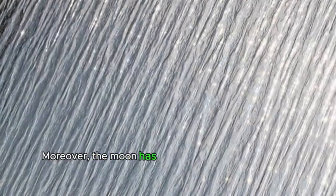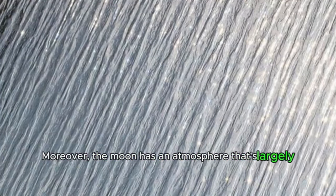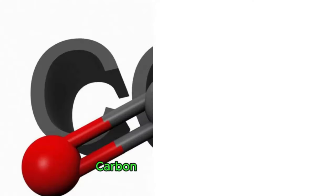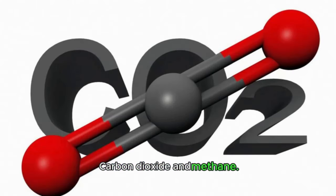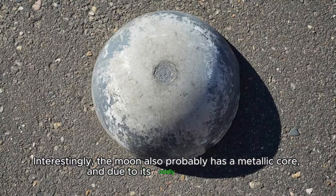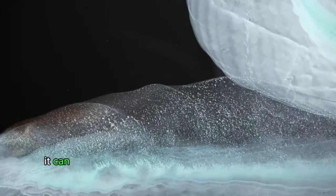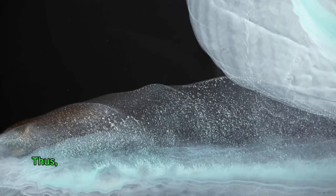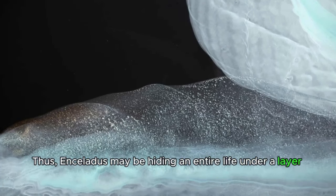Moreover, the moon has an atmosphere that's largely composed of water vapor, and also small amounts of nitrogen, carbon dioxide and methane. Interestingly, the moon also probably has a metallic core, and due to its oddly porous shape, it can heat the satellite's ocean, making it even more suitable for organisms. Thus, Enceladus may be hiding an entire life under a layer of ice.